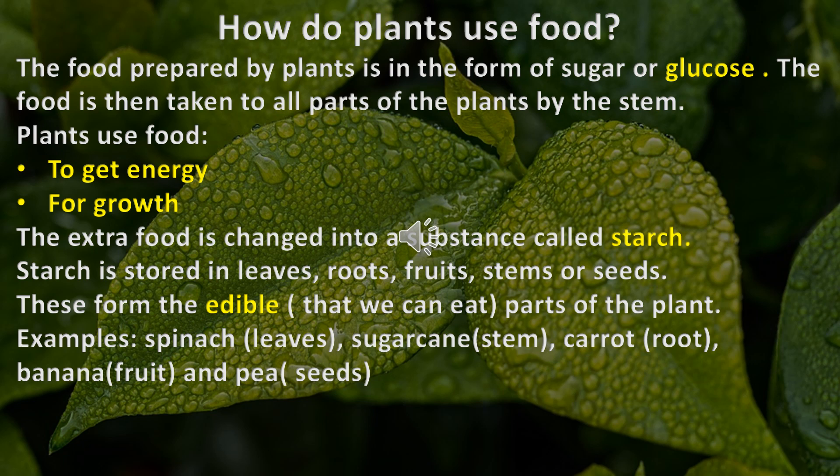How do plants use food? The food prepared by plants is in the form of sugar or glucose. The food is taken to all parts of the plants by the stem. Plants use food to get energy for growth. The extra food is changed into a substance called starch.